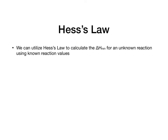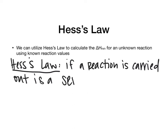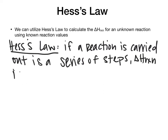In Chapter 5, Part 4, Hess's Law, we're going to use a different method to calculate delta-H reaction. Hess's Law states that if a reaction is carried out in a series of steps, delta-H reaction is equal to the sum of the parts.